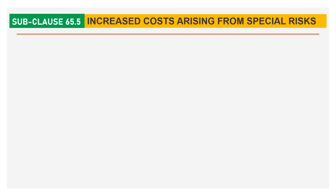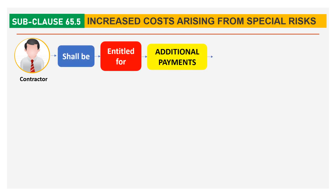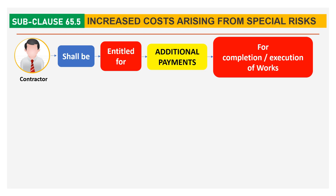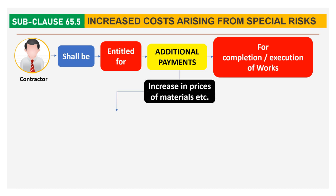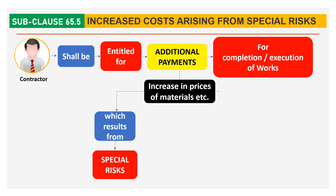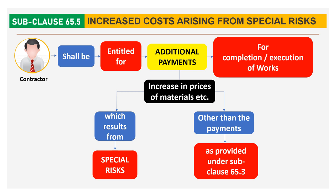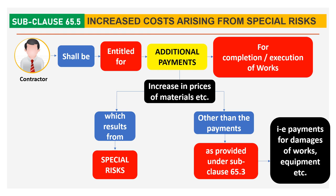Sub-clause 65.5 Increased Costs Arising from Special Risk. The contractor shall be entitled for additional payment for completion or execution of works. These additional payments would include increases in prices of materials and other like payments which result from Special Risk, other than the payments already provided under sub-clause 65.3 for damages to works and equipment.